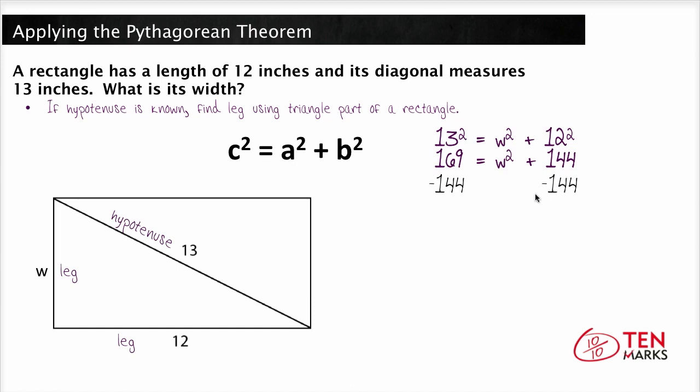Then we're going to subtract 144 from both sides and we get 25 equals W squared. Then you need to take the square root of both sides and we get W equals the square root of 25 which is 5 inches.